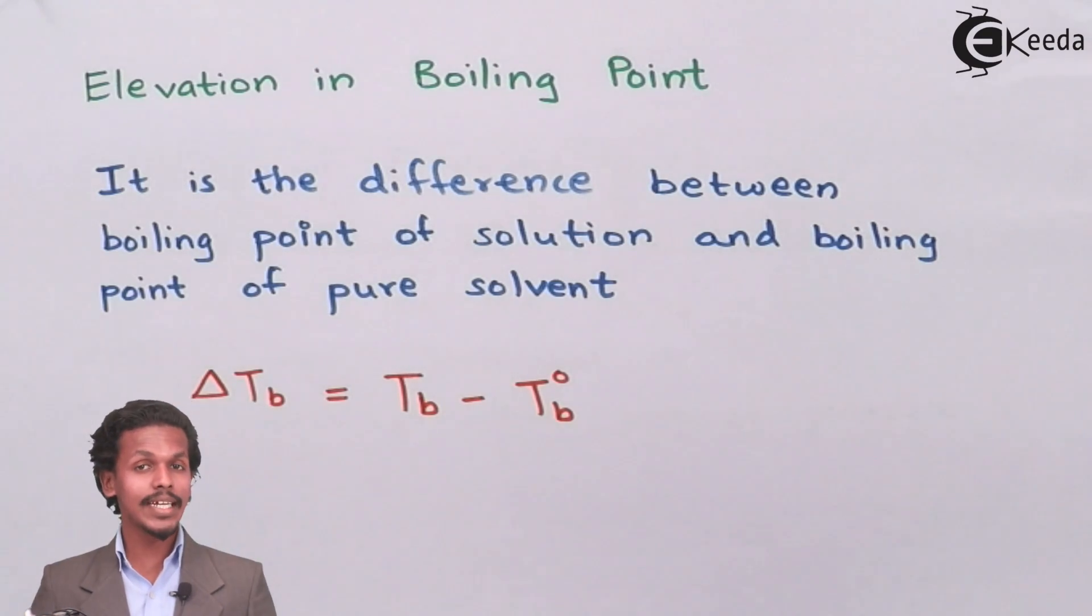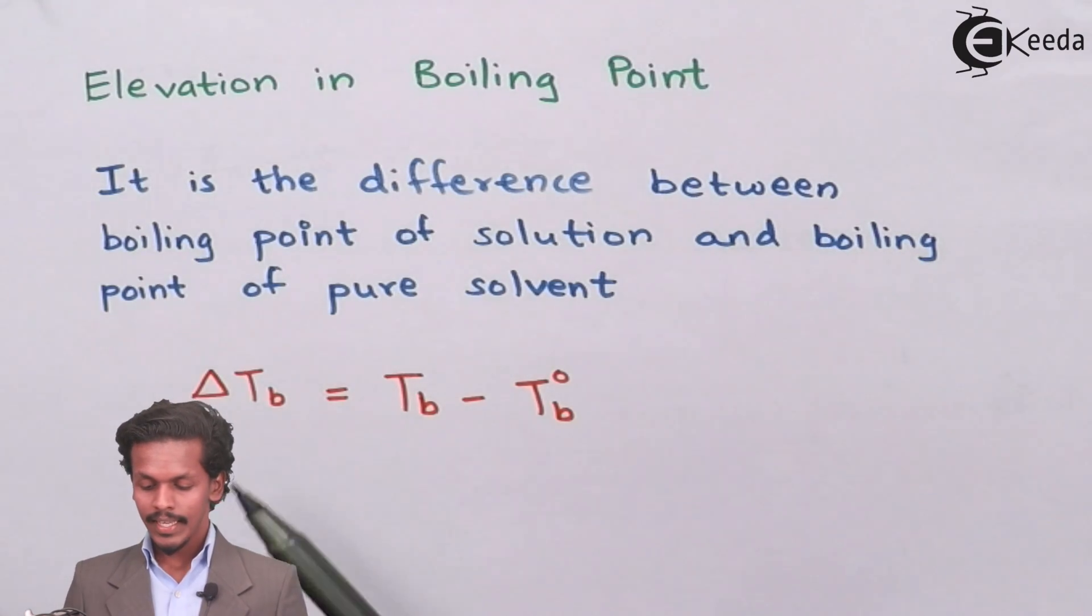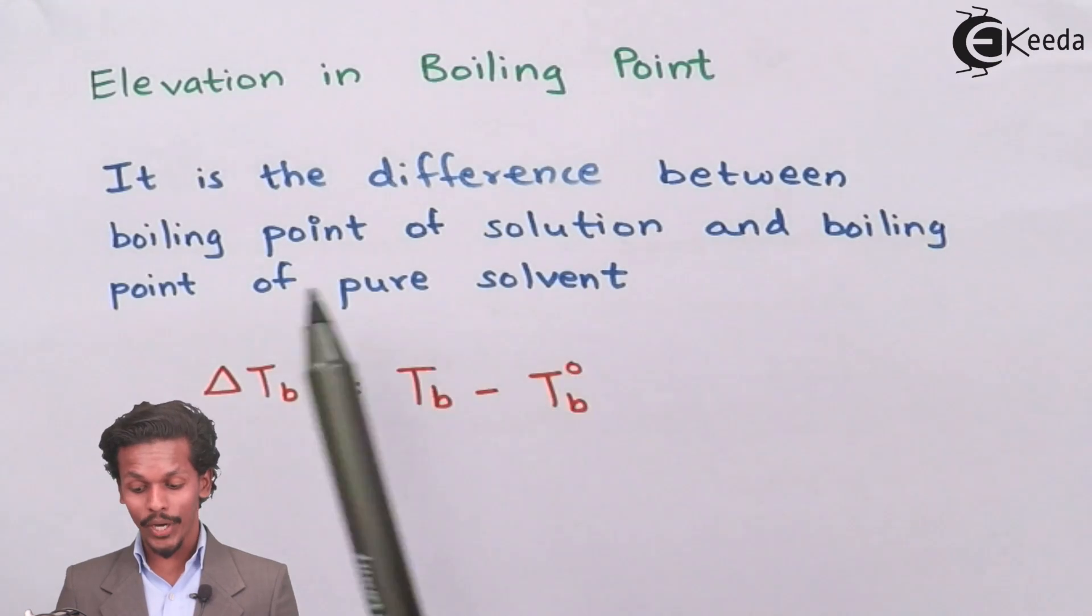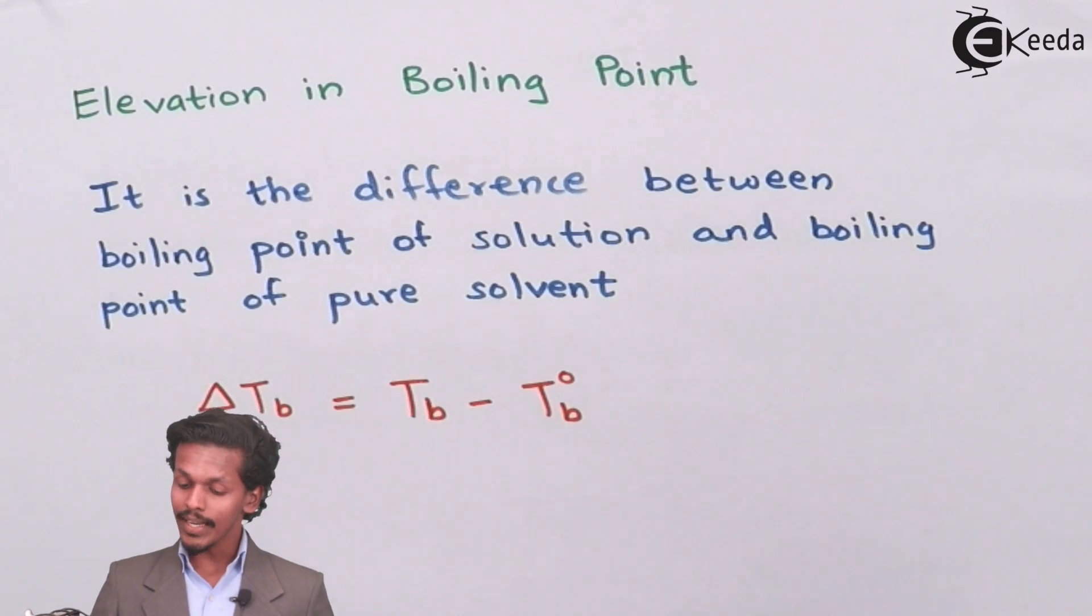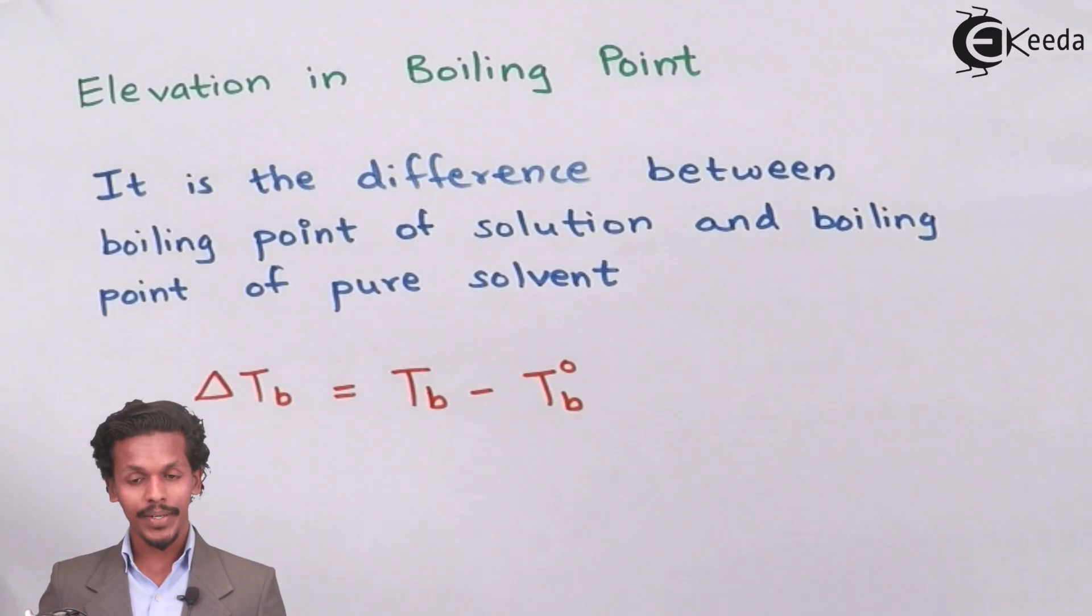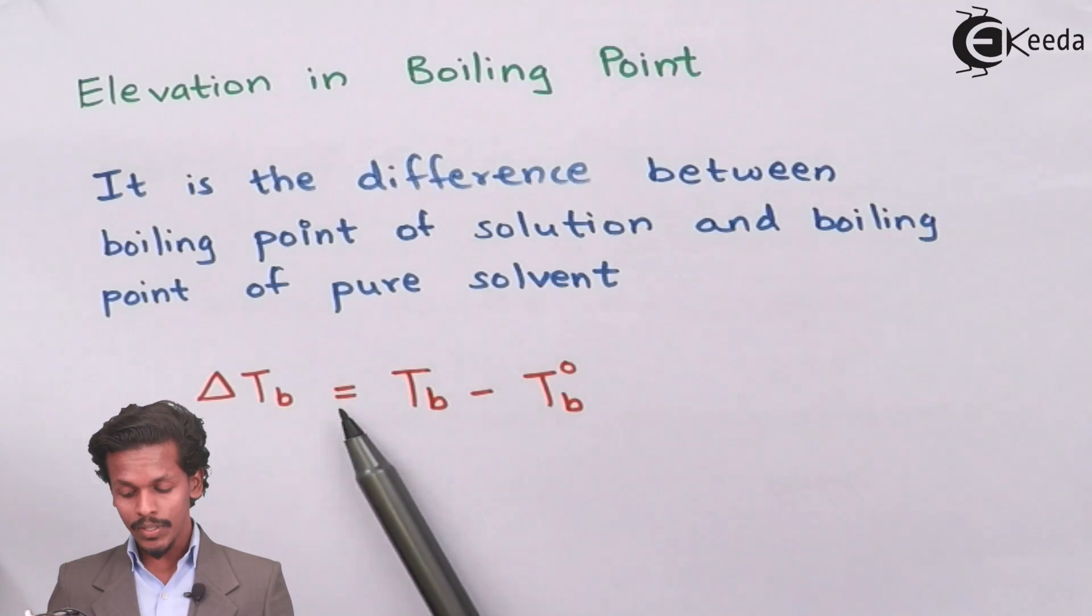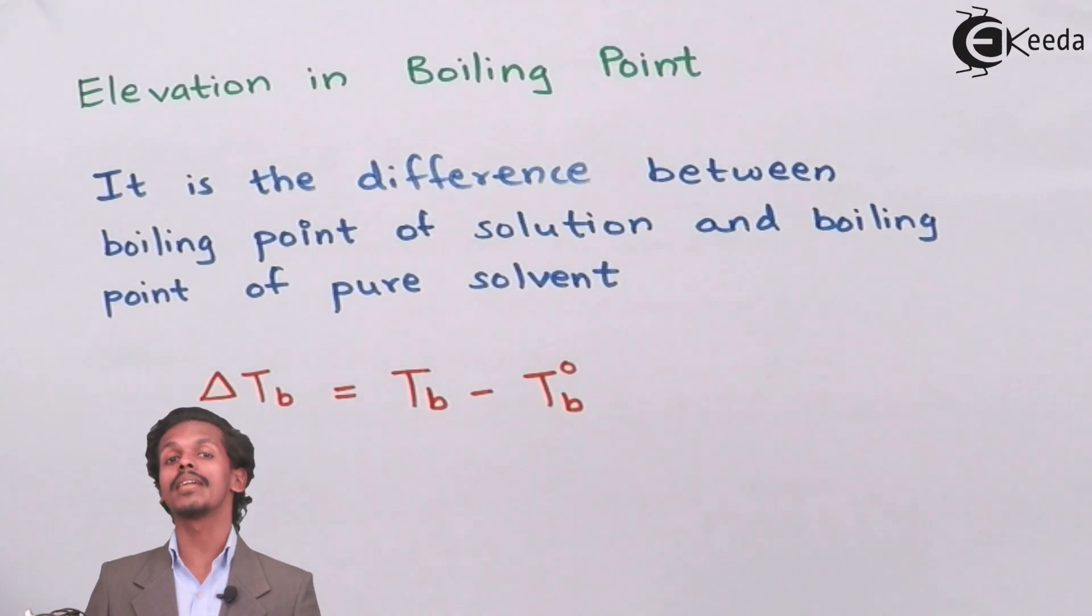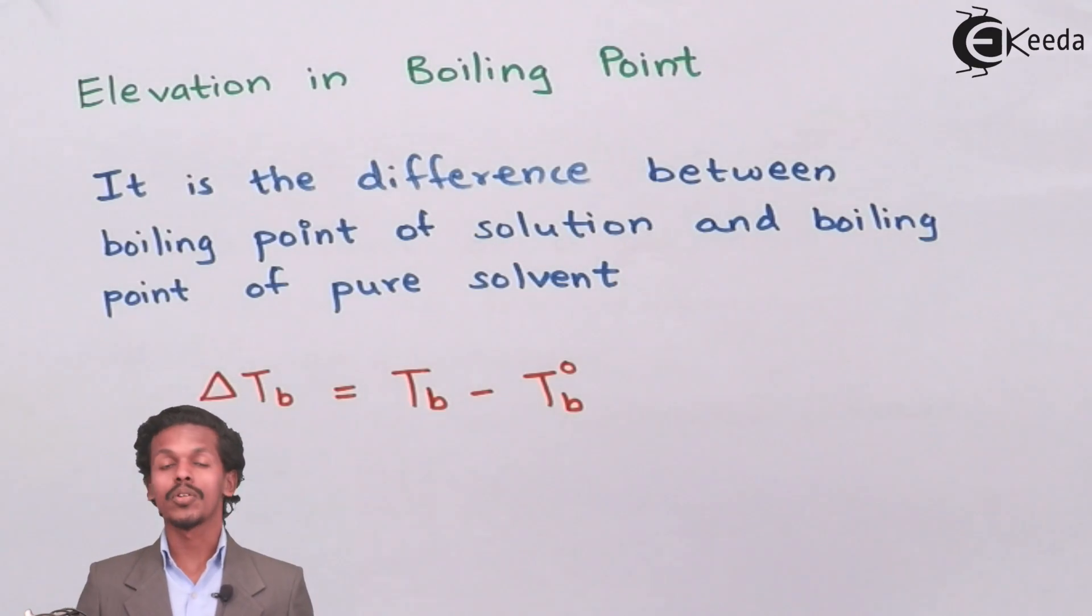As mentioned on your screen, the definition of elevation in boiling point is the difference between boiling point of a solution and boiling point of pure solvent. It is denoted by ΔTb which equals Tb minus Tb°, where Tb is the boiling point of the solution and Tb° is the boiling point of pure solvent.